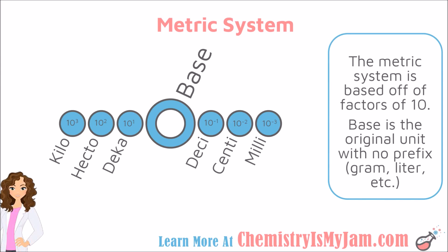The prefixes that are the most common are kilo, which is shifted by 10 to the third; hecto is shifted by 10 to the second; deca is shifted by 10; and then you have deci, which is shifted by 10 to the negative one; centi by 10 to the negative two; and milli, which is shifted by 10 to the negative three. Now in chemistry, we're often counting things like atoms, which are really, really small. Sometimes we end up using things like nano or micro. There are other prefixes outside of these, but these are the most common in the metric system.